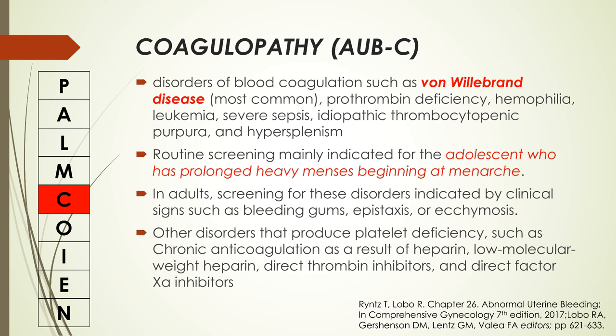Next is AUB-C, or AUB secondary to coagulopathy. These are disorders of blood coagulation, the most common of which is von Willebrand disease. Other coagulopathies include prothrombin deficiency, hemophilia, leukemia, severe sepsis, idiopathic thrombocytopenic purpura, and hypersplenism. Routine screening is mainly indicated for adolescents with prolonged heavy menses beginning at menarche. In adults, screening is indicated by clinical signs such as bleeding gums, epistaxis, or ecchymosis. Disorders producing platelet deficiencies such as chronic anticoagulation with heparin, low molecular weight heparin, direct thrombin inhibitors, and direct factor Xa inhibitors are also included under this classification.